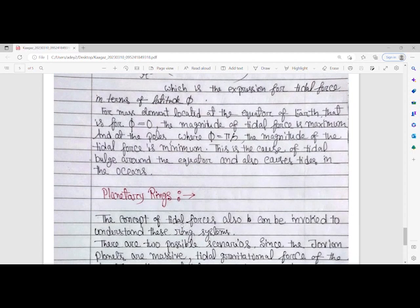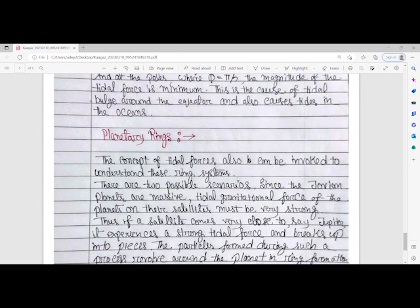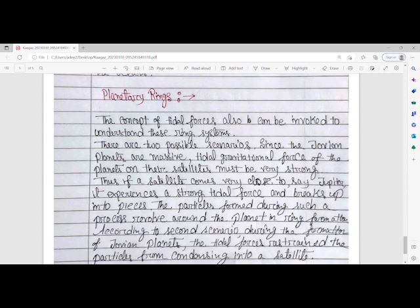This is the cause of tidal bulge around the equator, which also causes tides in the ocean. Now let's discuss planetary rings around Jovian planets. The concept of tidal forces can be invoked to understand ring systems. There are two possible scenarios.